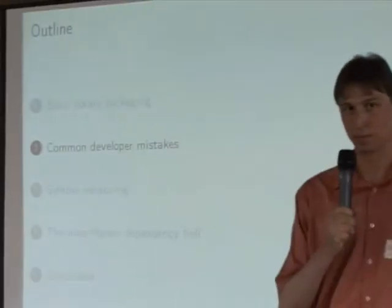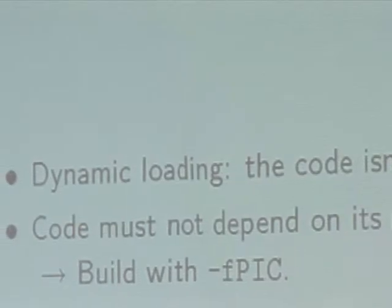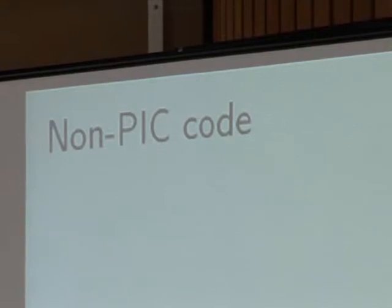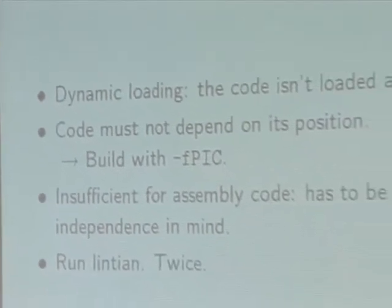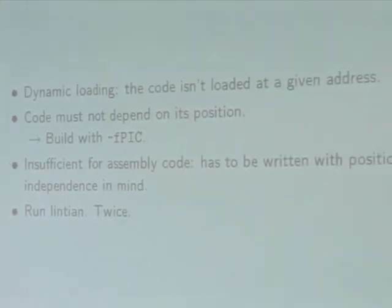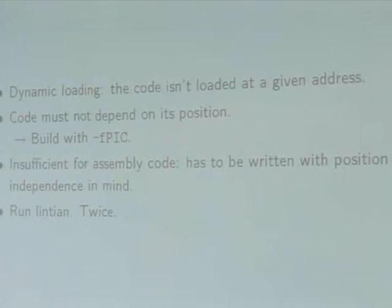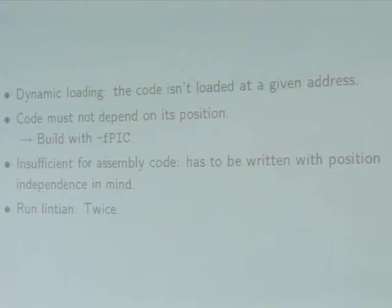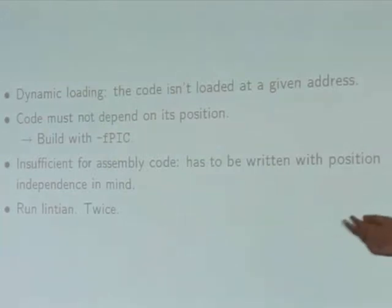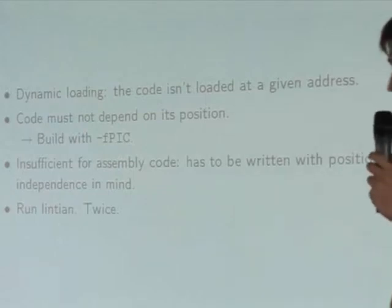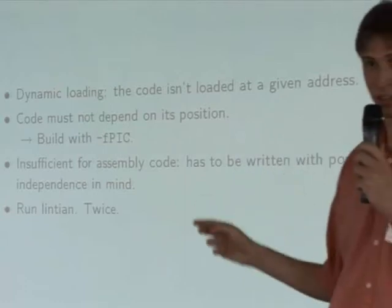Upstream often likes to make the Debian developer's life more complicated. The first mistake is non-position-independent code. Because when you are loading the code dynamically as a shared object, it is not loaded at a given address you can know in advance. So the code itself must not depend on the position in memory where it is loaded. There is a compiler flag for that: -fPIC. Some developers omit this flag. For assembly code this is still not enough, because assembly code is not necessarily position-independent. You may need an assembly specialist. Lintian can detect non-position-independent code — run Lintian.